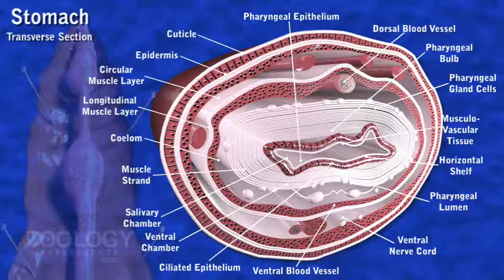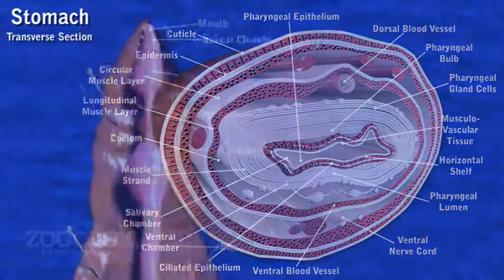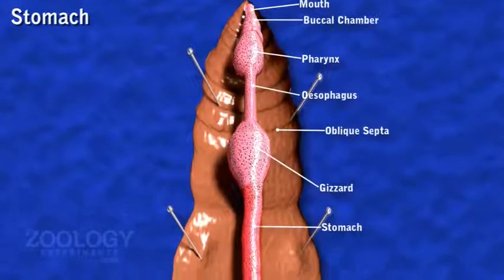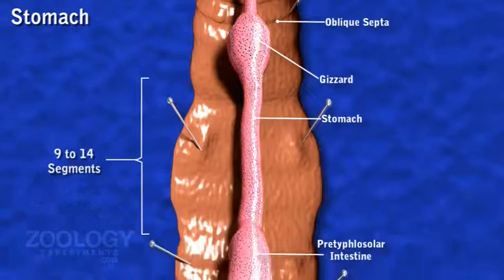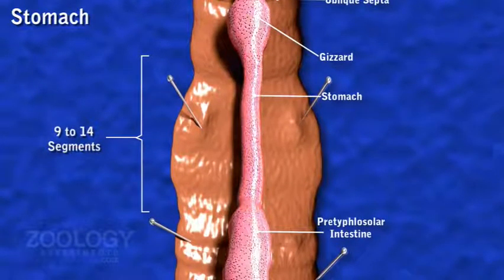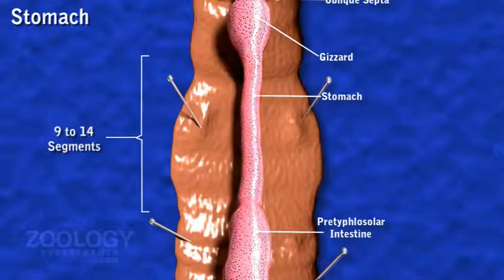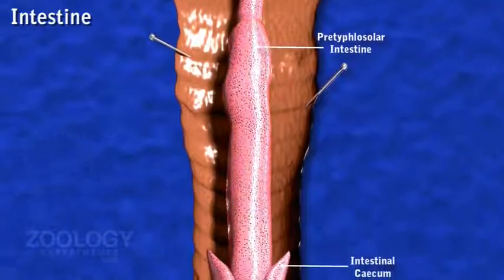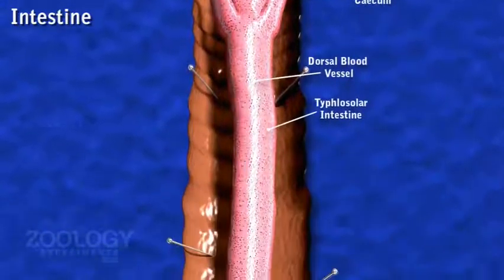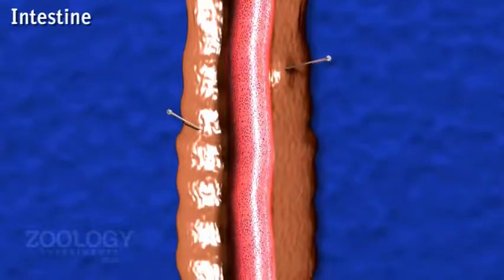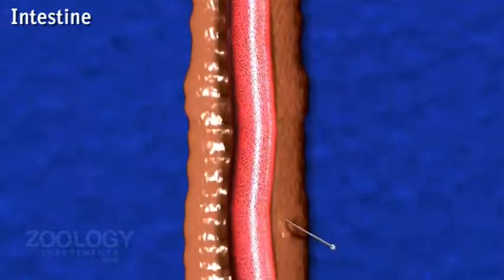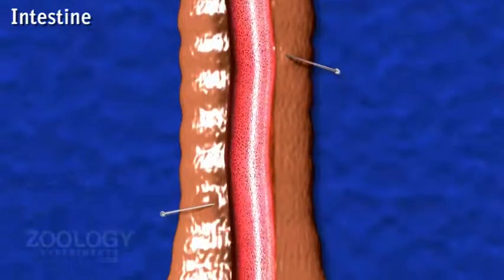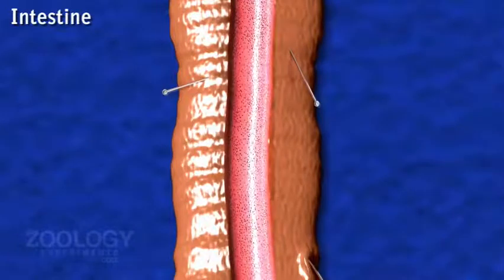The gizzard is followed by a short, narrow tube, the stomach, which extends from the 9th to the 14th segment, with a sphincter at each end. Its walls are highly vascular and glandular and thrown into internal transverse folds. The intestine is next to the stomach, which is a long, wide and thin-walled tube extending from the 15th segment to the last. It has a beaded appearance due to circular constrictions corresponding to septa.